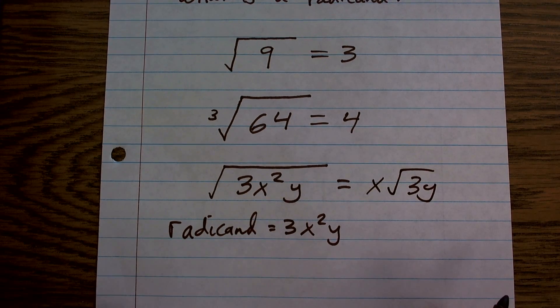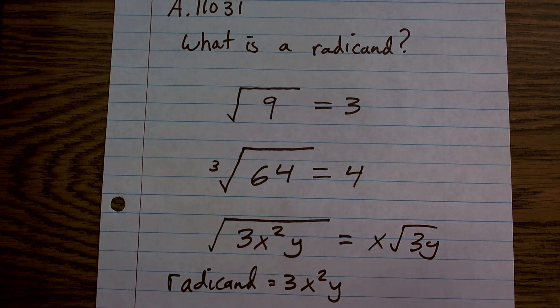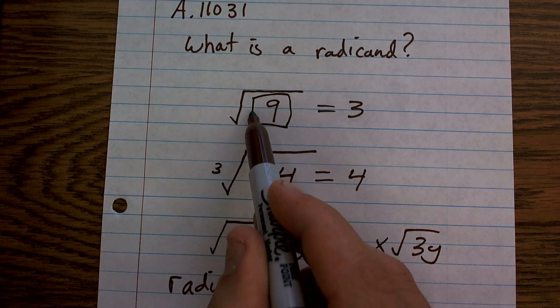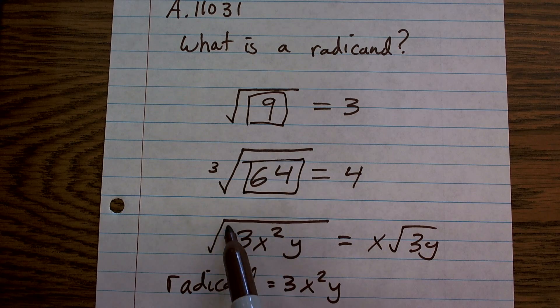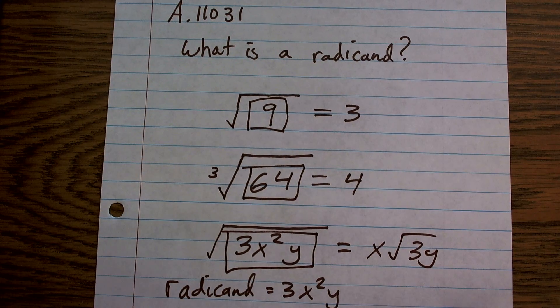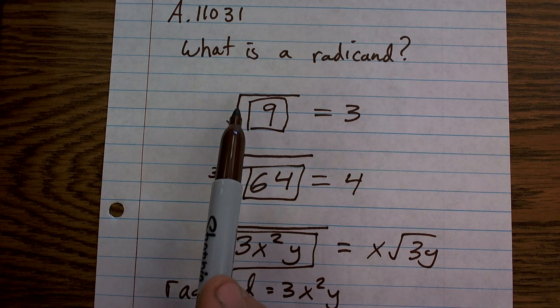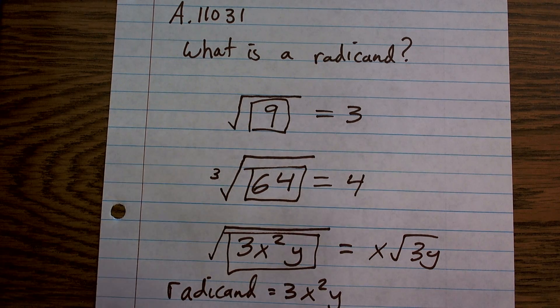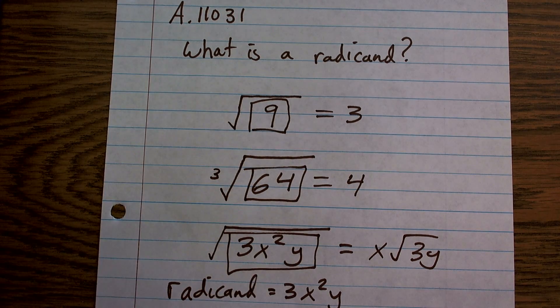And I have videos on that, showing you how to do that. But the main important thing is, I just want you to understand what the radicand is for each one of these problems. And that's all it really is. It's just the number under your square root symbol, or your radical symbol. It doesn't matter if it's a square root, cube root, fourth root, it doesn't matter. That's always going to be your radicand.